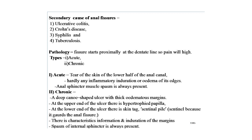In acute fissure in ano, there is hardly any inflammatory induration or edema of the edges, and anal sphincter muscle spasm is always present. In chronic fissure in ano, it is a deep canoe-shaped ulcer with thick edematous margins. At the upper end of the ulcer there is a hypertrophic papilla, and at the lower end there is a skin tag called a sentinel pile, which guards the anal fissure. Spasm of the internal sphincter is always present.